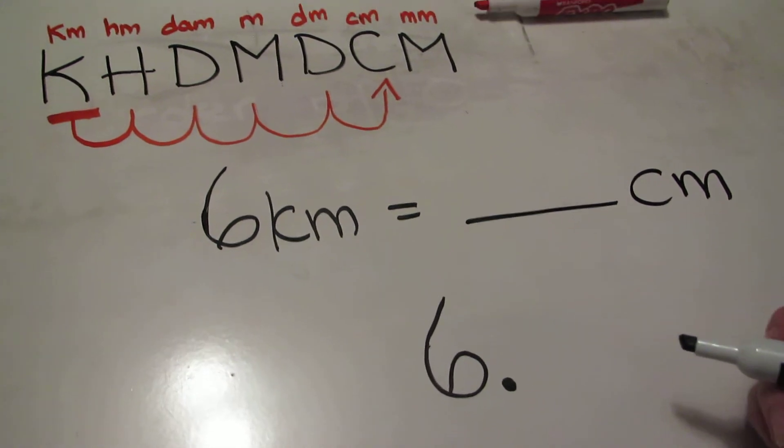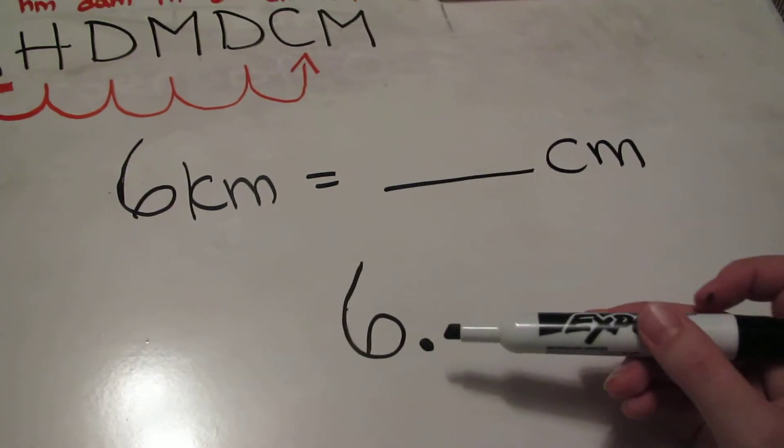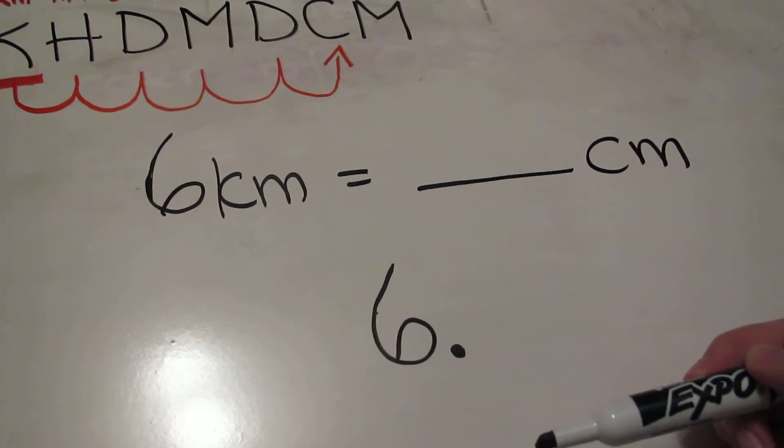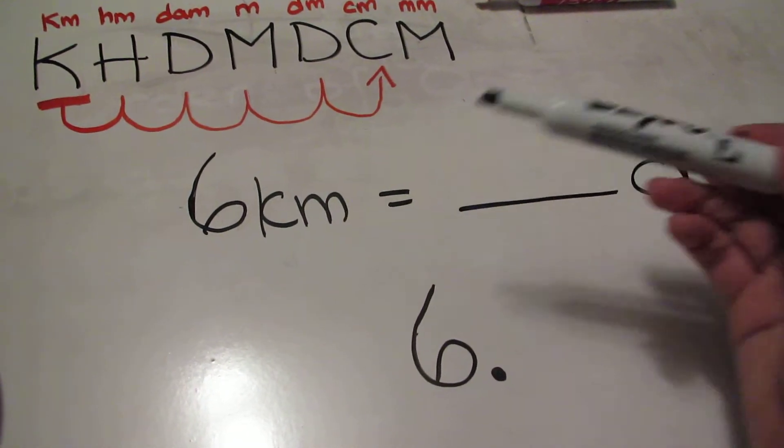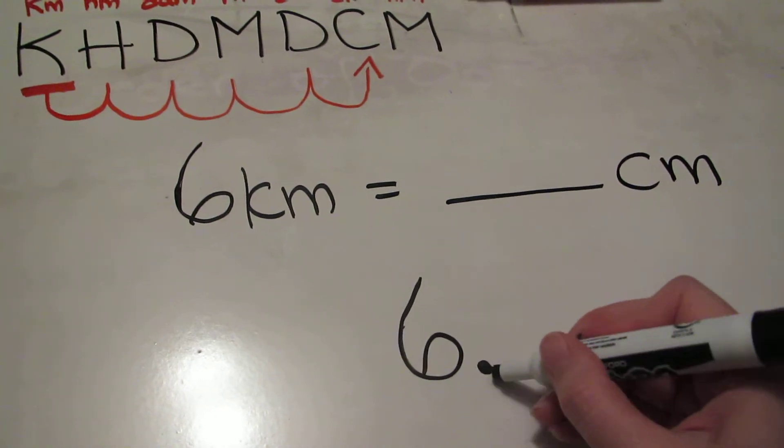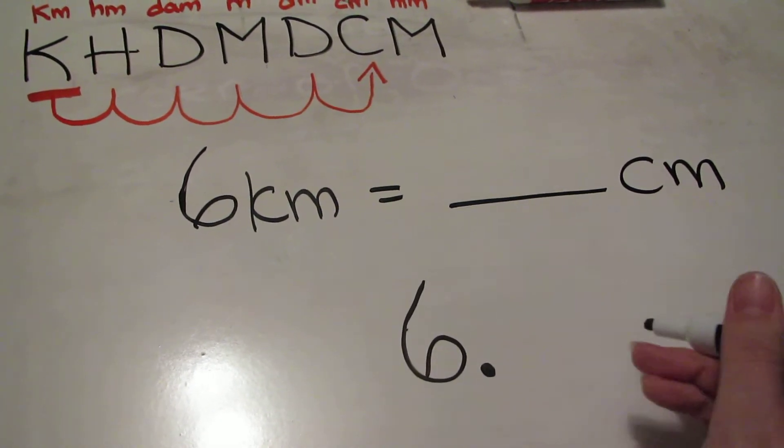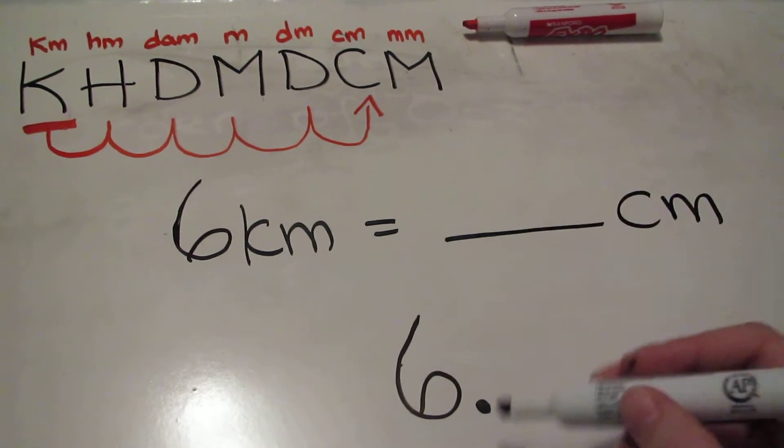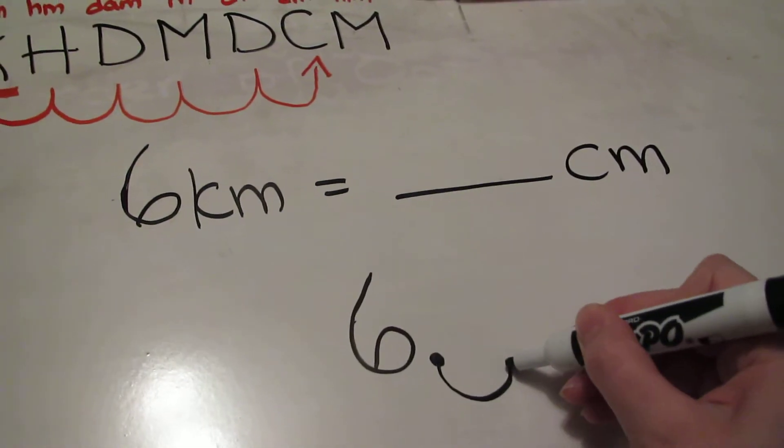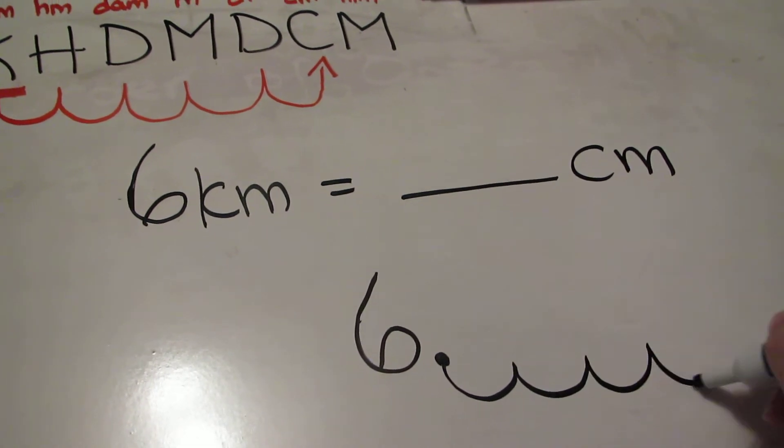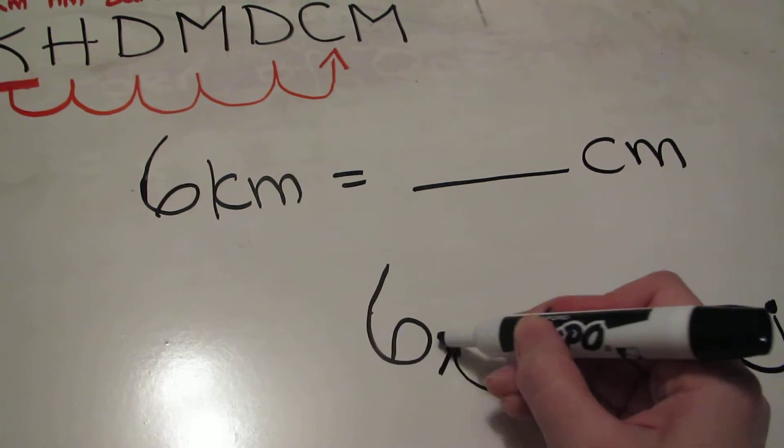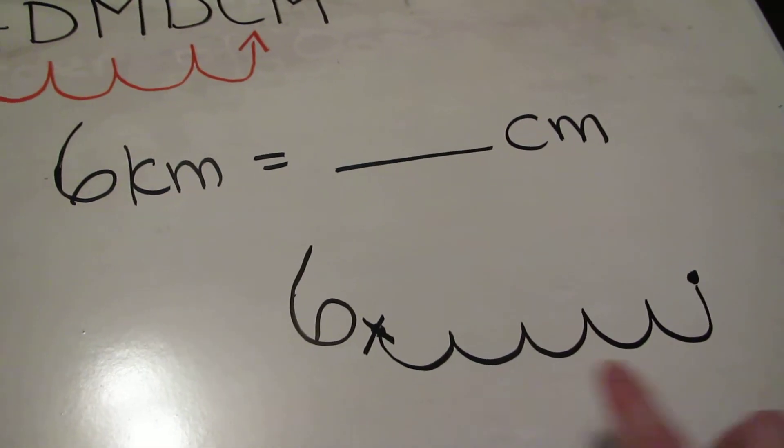Because this is a whole number, we know our decimal is going right after the six and that is what's moving, and we know it's moving five places. We're going to move to the right because that is exactly the direction I went when I was doing it up here. Here we go: one, two, three, four, five. The decimal's here now, not here anymore. Now I have all these empty spaces.